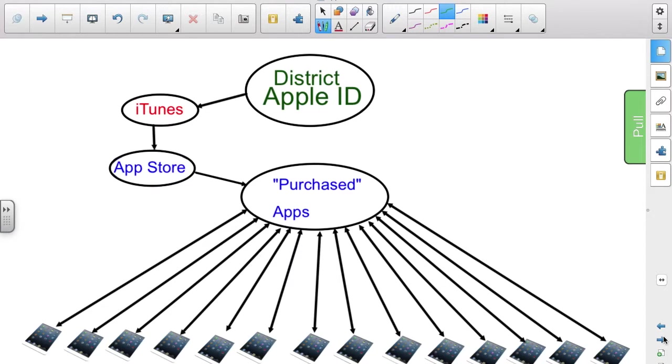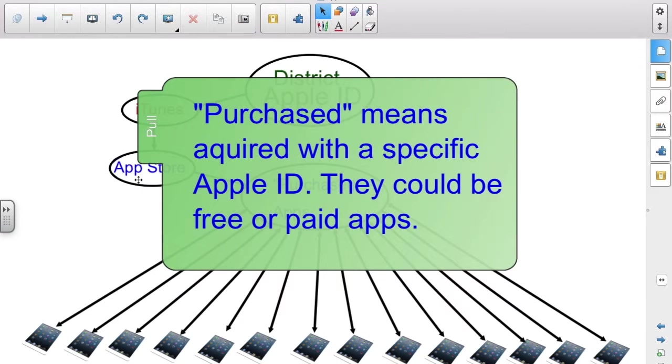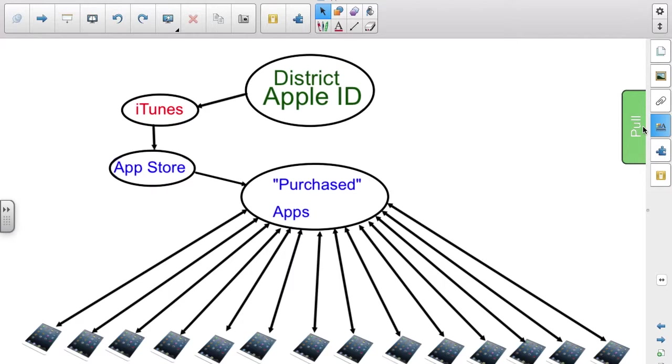So, when you're logged in with the district Apple ID, you have access to iTunes and the App Store. And, in the App Store app, there's a section called Purchased. In that Purchased section, you will see any apps that have been purchased by any of the iPads associated with that district Apple ID. By Purchased, we mean that it was acquired using a specific Apple ID. So, it doesn't necessarily mean that it has to be paid. It could be a free app as well. So, the Purchased section has all of the apps that have been acquired by that Apple ID. So, if you're logged in with your school Apple ID, you're going to see all the Purchased apps by anyone else who has gotten an app using that Apple ID. That's not a problem.